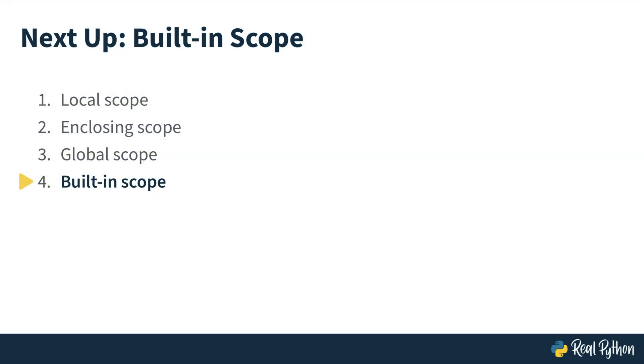So far we have L, E, and G of the LEGB acronym — the local scope, the enclosing scope, and the global scope. In the next lesson, we will tackle the fourth letter of LEGB and inspect the built-in scope.